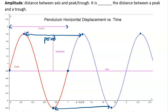The period can also be measured from the equation of the axis, peak to peak, or trough to trough. It could also be measured from any point out to where we reach it again at the same y value going in the same direction — it's the x distance from one point to the same point in the same direction.